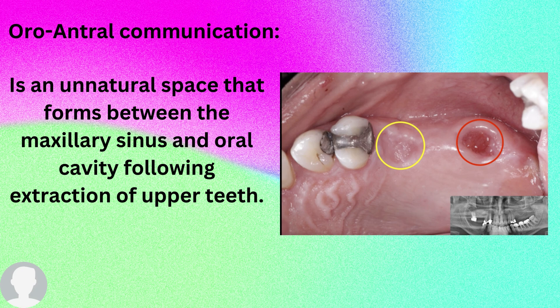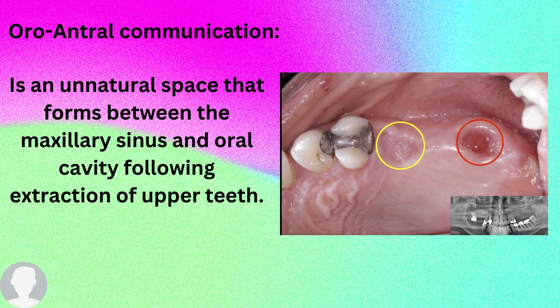There is an unnatural space that forms between the maxillary sinus and the oral cavity following the extraction of the upper teeth — not lower teeth, because the maxillary sinus is only up top. So if you extract the upper posterior teeth, specifically the maxillary posterior teeth, they are in close proximity to the maxillary sinus. The teeth most commonly involved are the palatal root of the maxillary first molar together with the maxillary second molar, as these are the closest to the maxillary sinus.